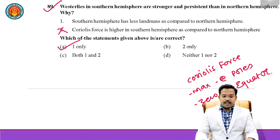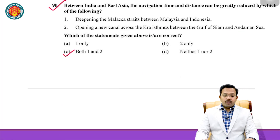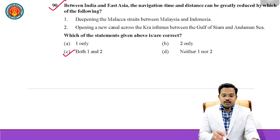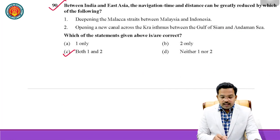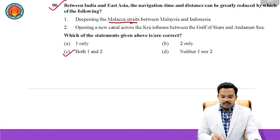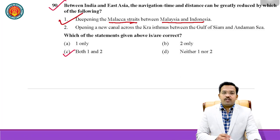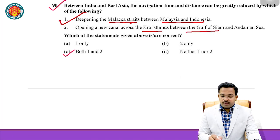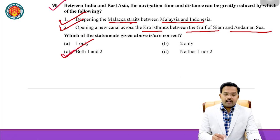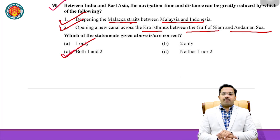Question number 90: Between India and East Asia, the navigation time and distance can be greatly reduced by deepening the Malacca Straits between Malaysia and Indonesia — correct. Also, opening a new canal across the Kra Isthmus between the Gulf of Siam and the Andaman Sea is also correct. So both statements are correct — do the mapping carefully as good questions can come from this.